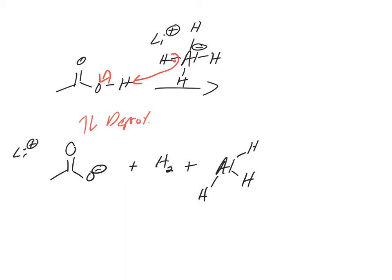Anytime you have H⁻ — anything with a minus charge or a nitrogen — it's going to deprotonate the carboxylic acid first, because carboxylic acid is an acid.